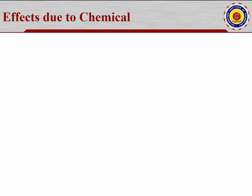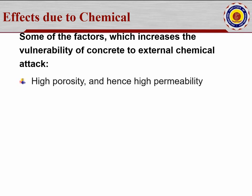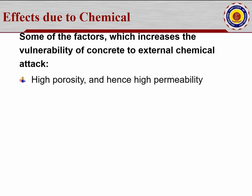Next are effects due to chemical attack. Some of the factors which increase the vulnerability of concrete to attack are high porosity and hence permeability. When high porosity develops in the concrete structure, permeability increases; slurry will get through and the strength will decrease. Improper choice depends on the exposure place — for example, OPC 33 might be perfect in some places, while different cements with appropriate choice suited to that particular test condition are needed elsewhere.